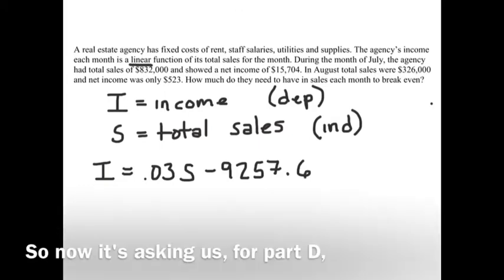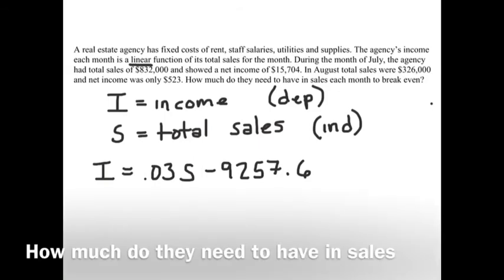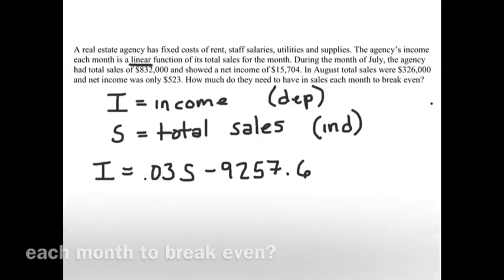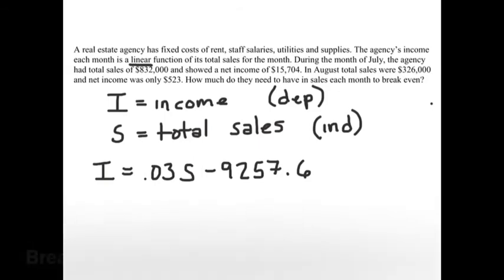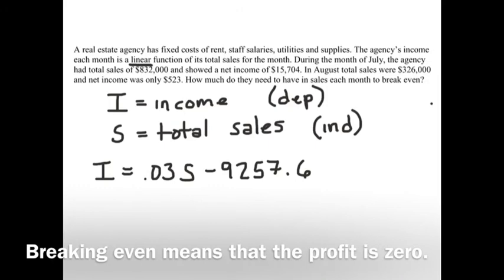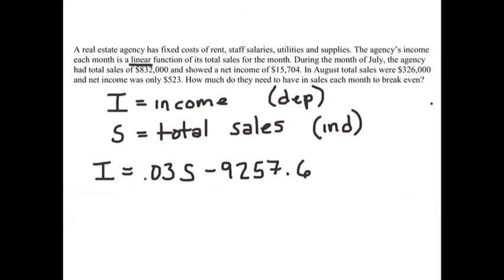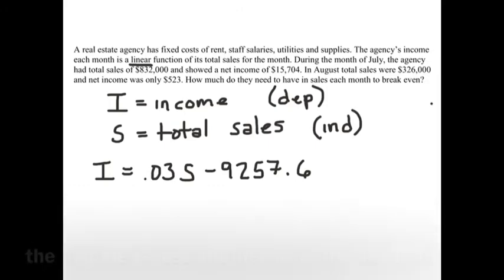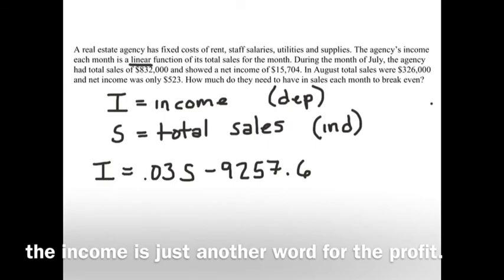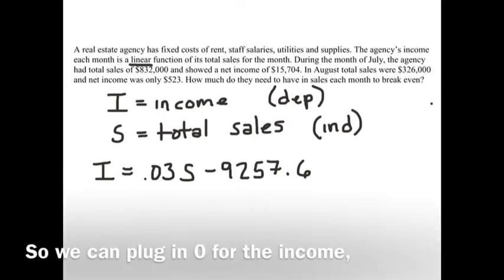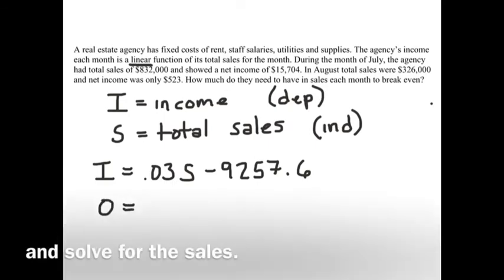Now it's asking us, for part D, how much do they need to have in sales each month to break even? Breaking even means that the profit is zero, and as mentioned earlier, income is just another word for profit. So we can plug in zero for the income and solve for the sales.